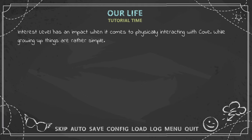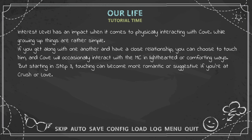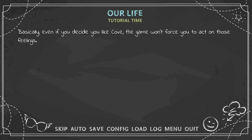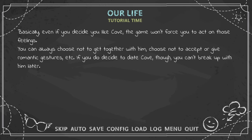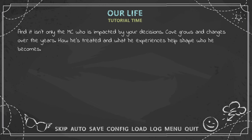Interest level has an impact when it comes to physically interacting with Cove. Things are rather simple — if you get along and have a close relationship, you can choose to touch him and Cove will occasionally interact with the MC in light-hearted or comforting ways. Starting in Step 3, touching can become more romantic if you're at Crush or Love. Basically, even if you decide you like Cove, the game won't force you to act on those feelings. If you do decide to date Cove though, you can't break up with him later.